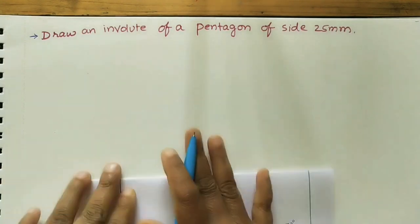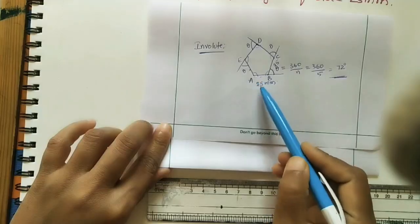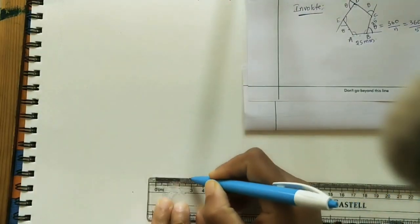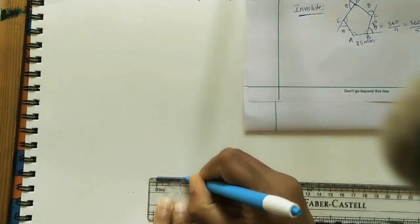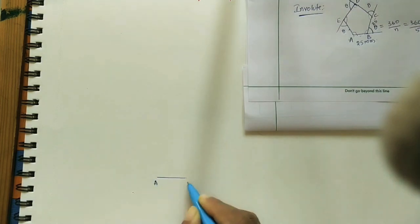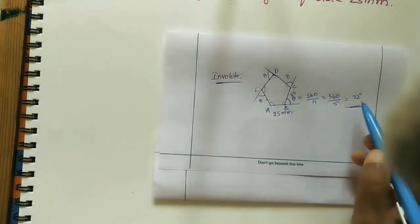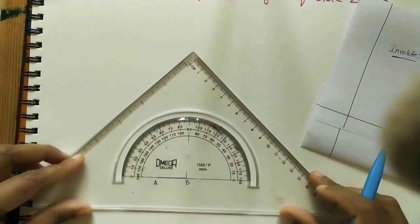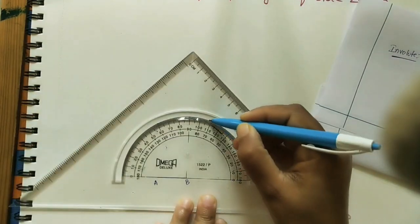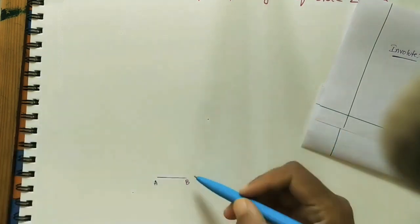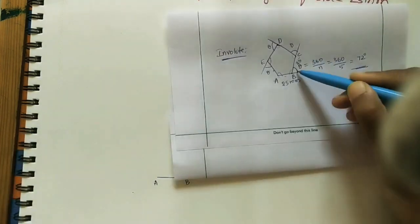First, we will do this pentagon in the sheet by using the instruments. Take 25mm side initially. Mark AB. And after that take angle, that is 72 degrees. From this side 72. In this direction, take 25mm.